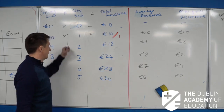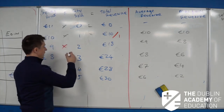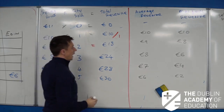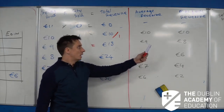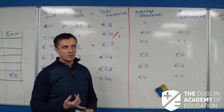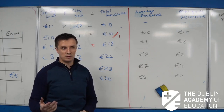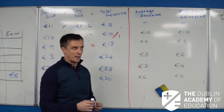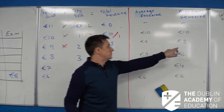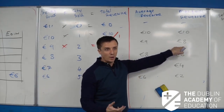Now if I drop my price down from 10 to 9 euro, Barry is going to come in and buy one too. So now I'm selling 2 markers: 9 by 2 is 18, so my total revenue is 18. My average revenue is 9 euro, but my marginal revenue is only going to be 8 — even though Barry paid me 9 euro for it. That can be very, very confusing.